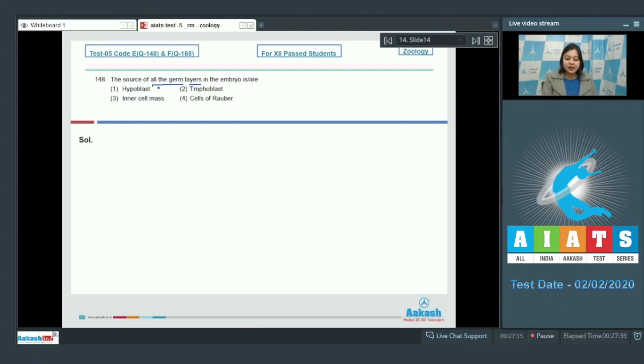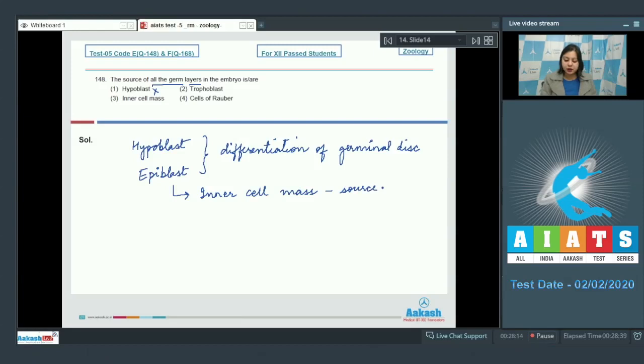Number 1. Hypoblast is incorrect as hypoblast and epiblast are formed as a result of differentiation of germinal disc. The epiblast derived from the inner cell mass is the source of all germ layers.